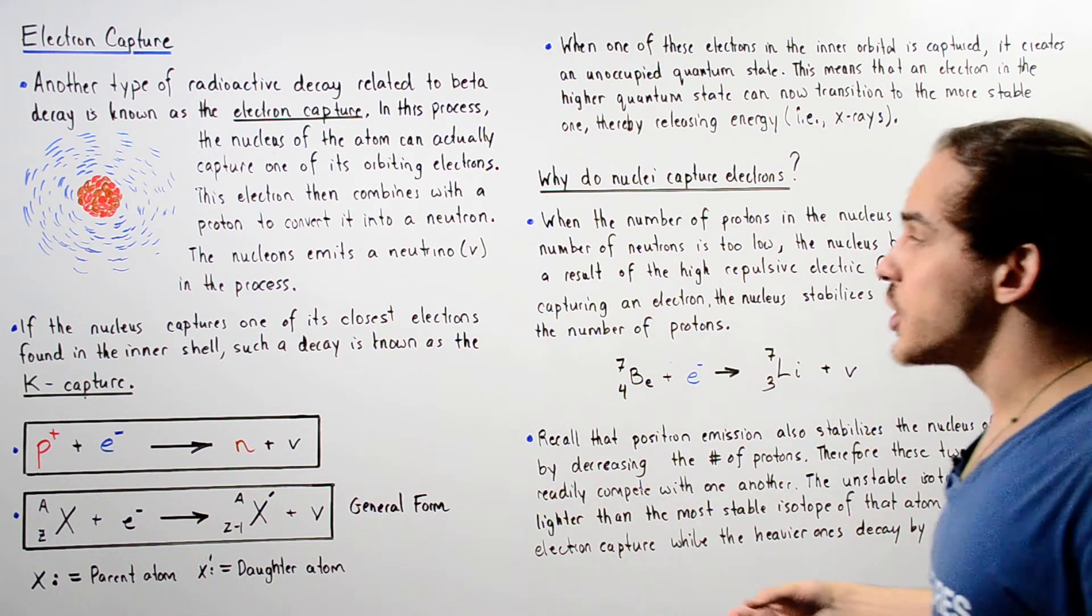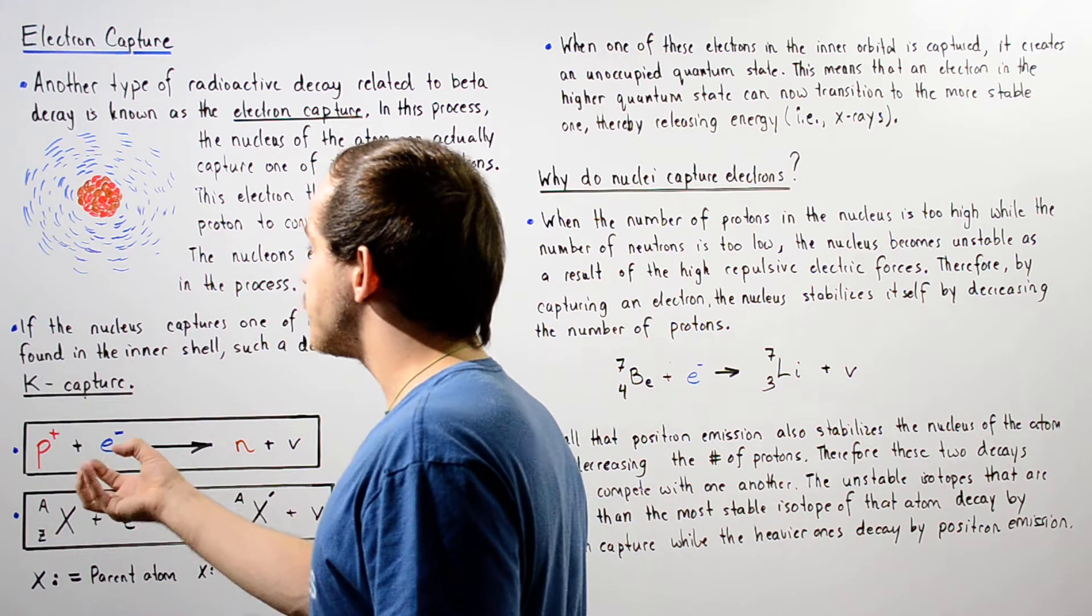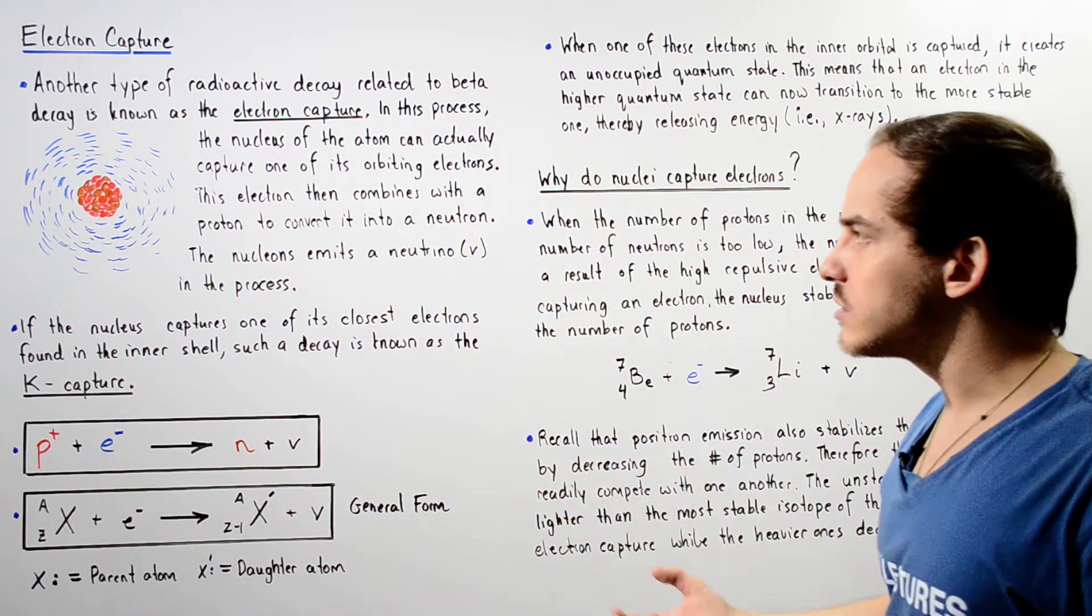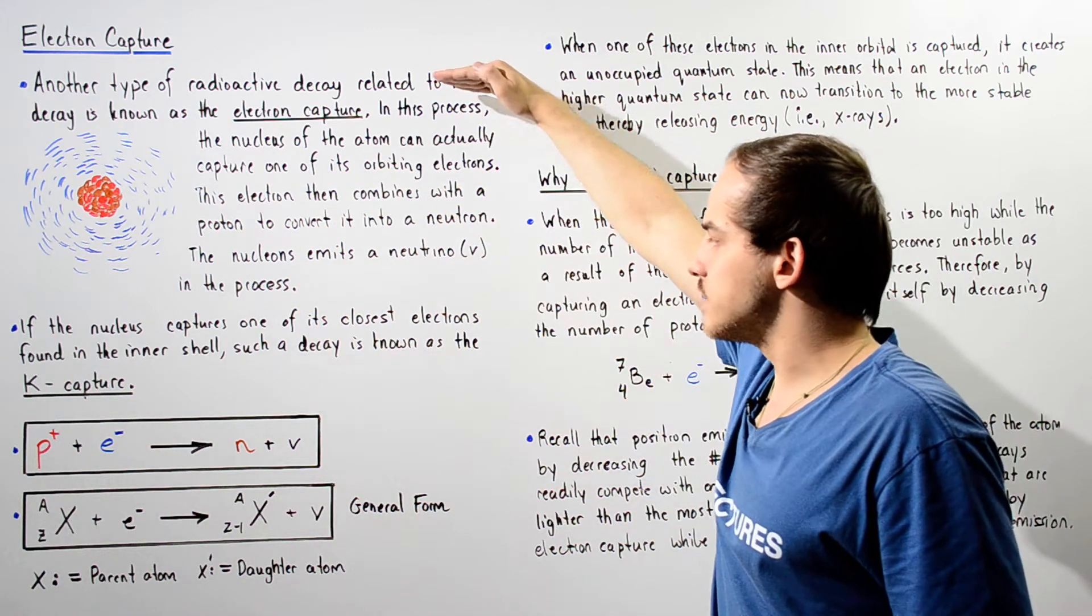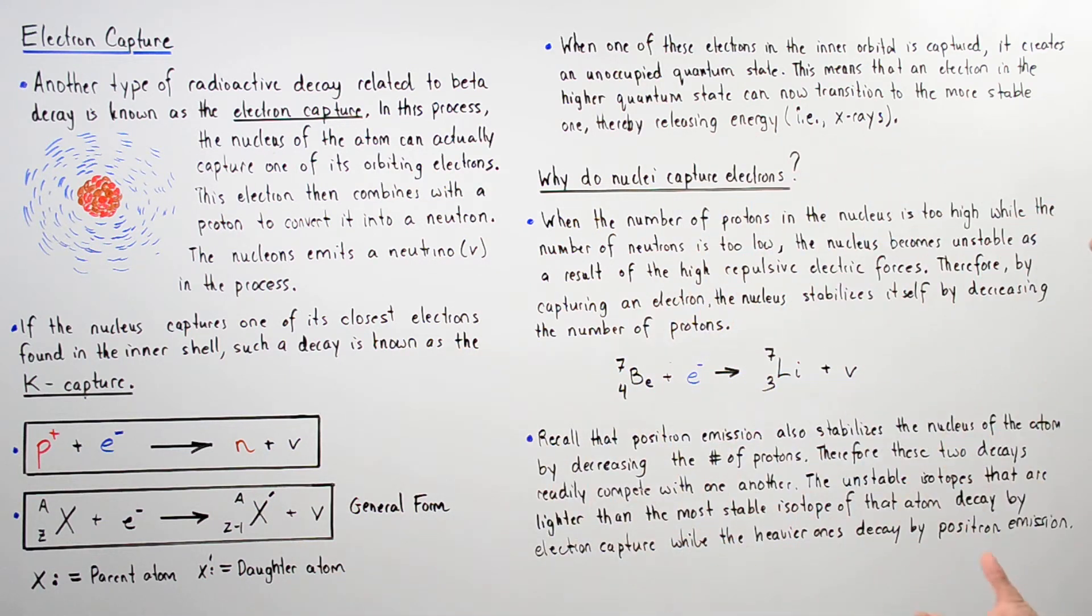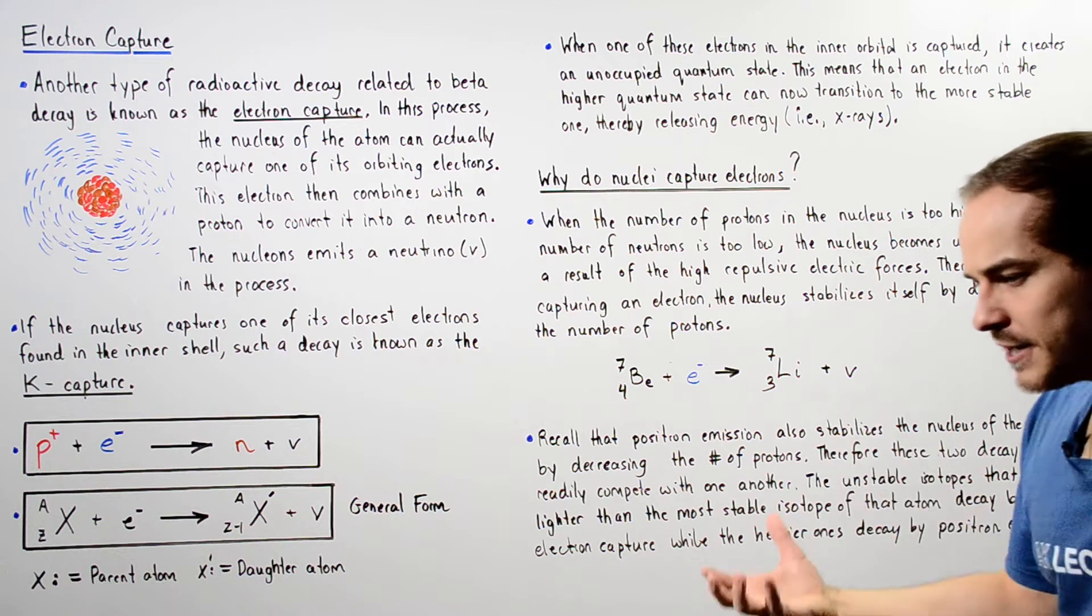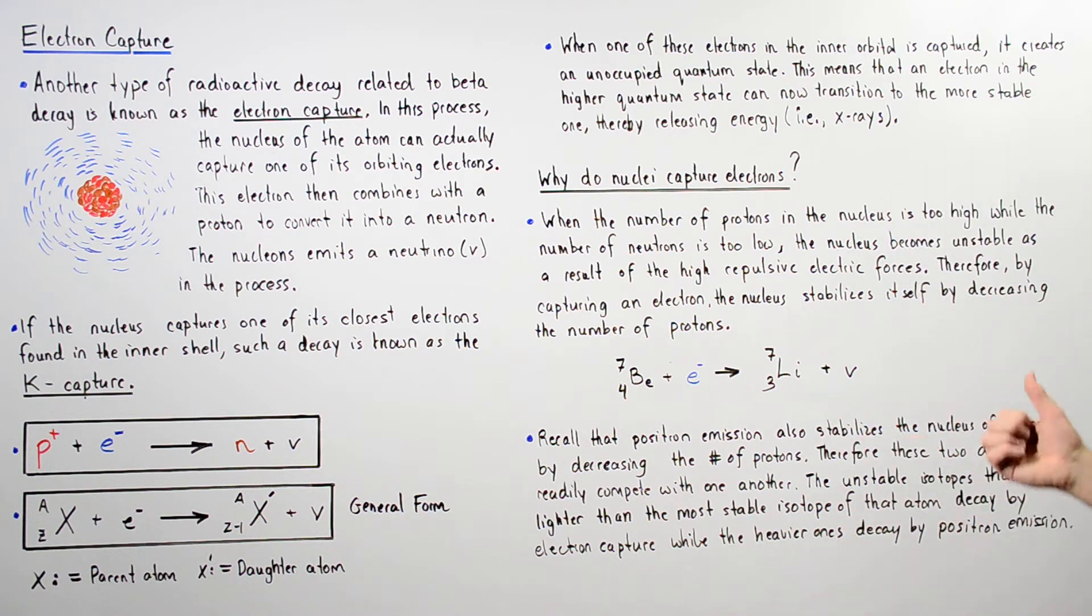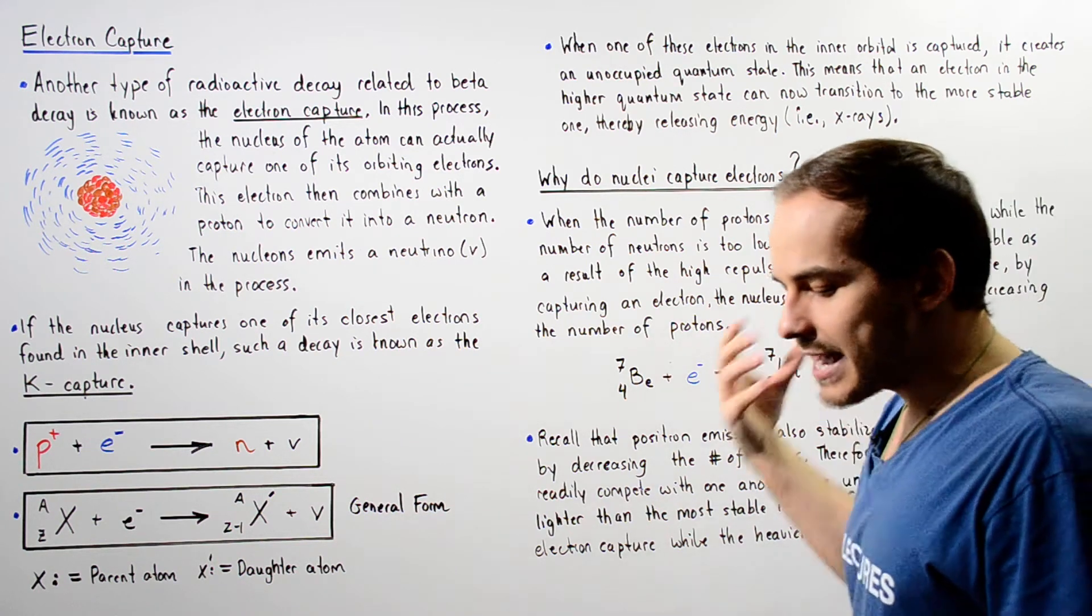And that means when this transition takes place, when an electron goes from a higher quantum state to a lower quantum state, it releases a photon of energy. For example, if the frequency is just right, our photon can be an X-ray.